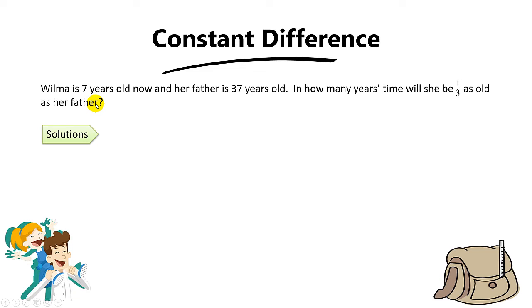So how do we know this question falls under constant difference? Under constant difference, the difference remains unchanged. When you see questions, they are linked to age. One concept you'll know is the age difference between two people will always be the same.